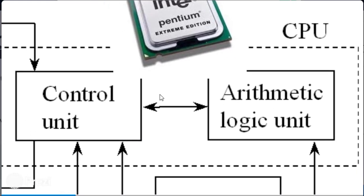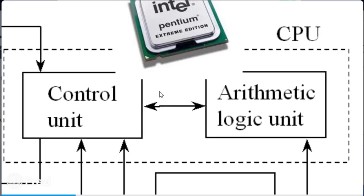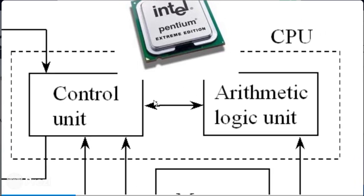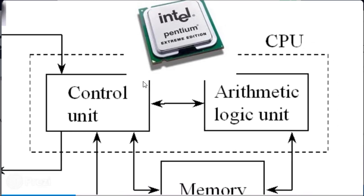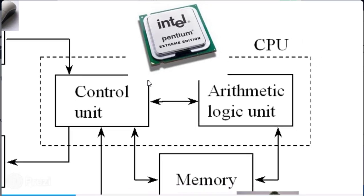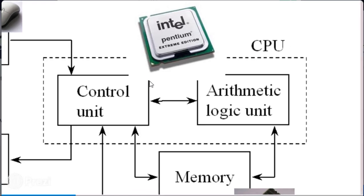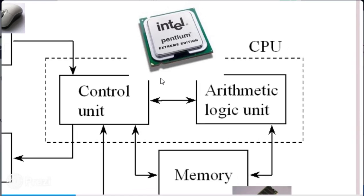The CPU contains two units: the control unit and the arithmetic logic unit. The arithmetic logic unit handles computations — like addition, subtraction, and division. The control unit has to do with instructions — whether to move or control the flow of data within the system.